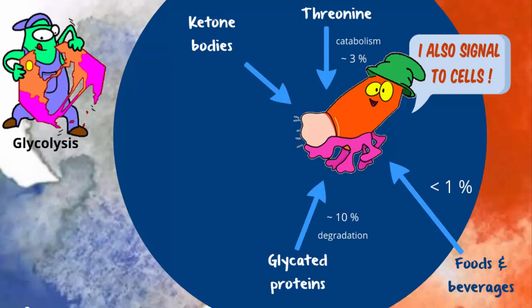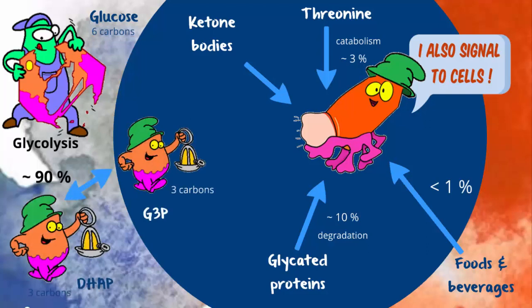The biggest producer of methylglyoxal is glycolysis. This is the process that splits 6-carbon sugars, such as glucose, into 2–3 carbon compounds, referred to as trioses.